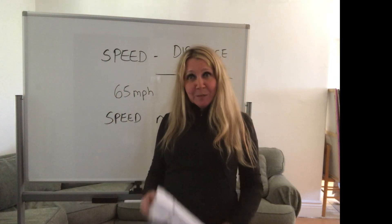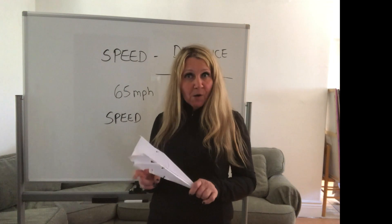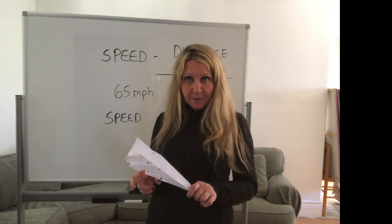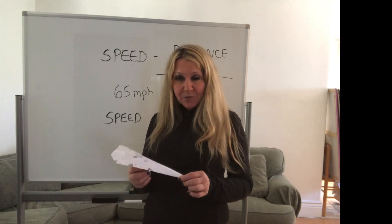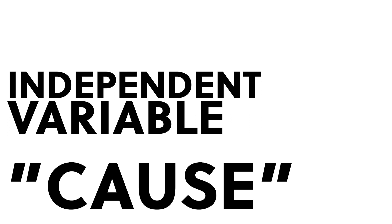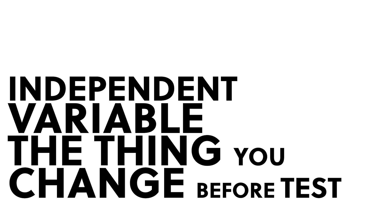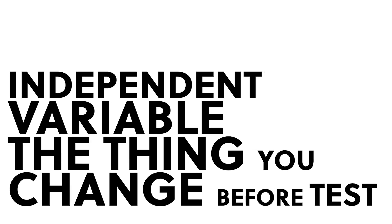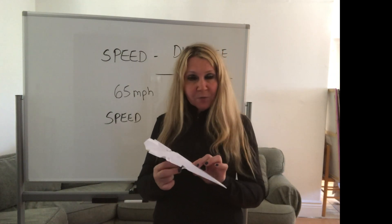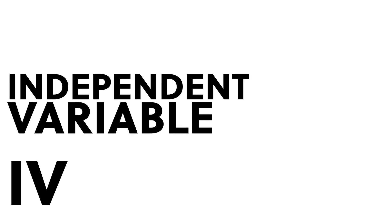The independent variable is like the cause. It is the variable that you change before you actually run the test. So with your paper airplanes it could be the wingspan, it could be the type of paper, it could be the weight — whatever. That's the independent variable; it's like the cause.